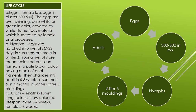The eggs hatch into nymphs in 7 to 22 days. The hatching time differs between summer and winter — 7 to 22 days in summer, but longer in winter. Young nymphs are different in color — brown — and have anal filaments.